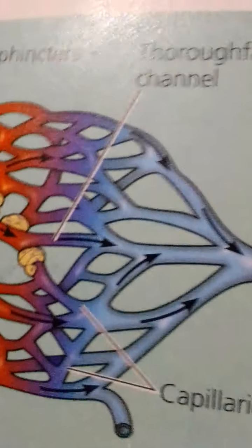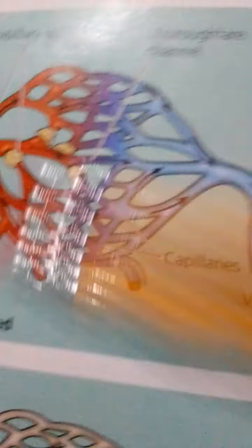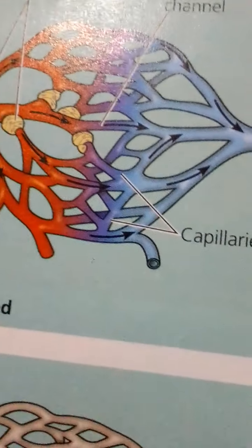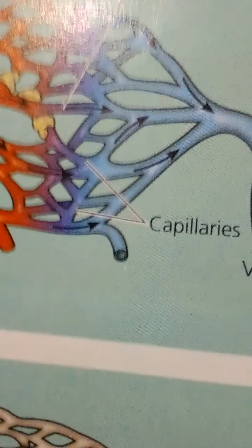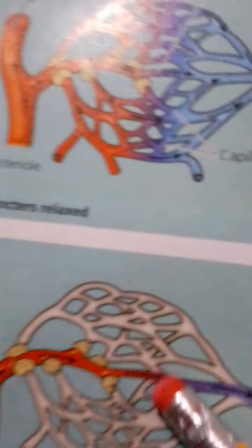The plasma proteins remaining in the capillaries, especially albumin, create an approximately constant osmotic pressure from the arteriole to the venule end of the capillary bed. In contrast, blood pressure drops sharply. This difference between blood pressure and osmotic pressure drives fluid out of capillaries at the arterial end and into capillaries at the venule end.